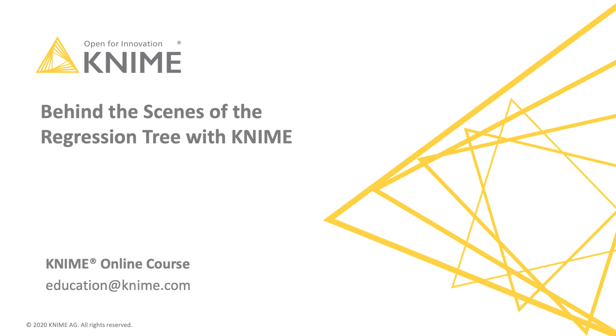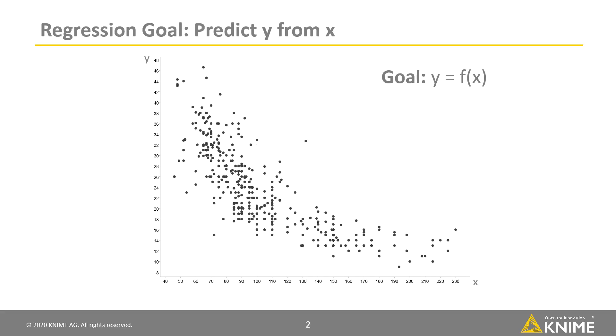An overarching goal of regression analysis is to model non-numerical outcomes based on the available input features in a training set. Say with a training set like this, what would be a good model to describe y based on the input feature x?